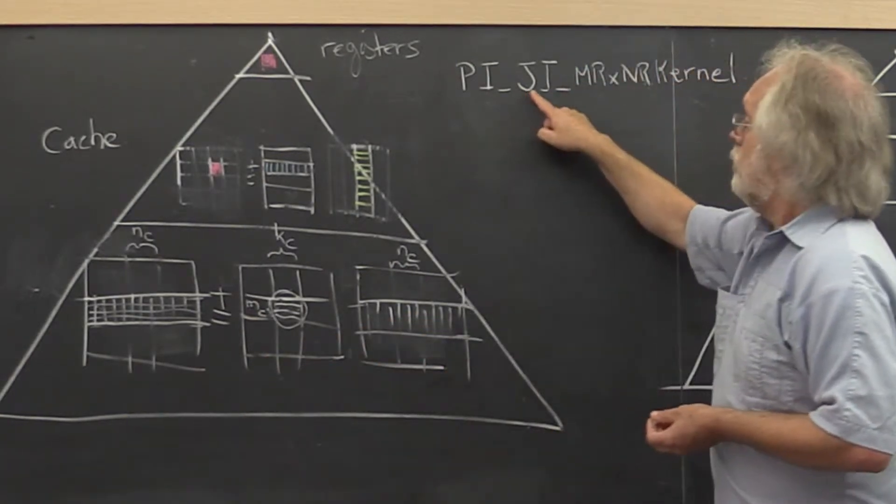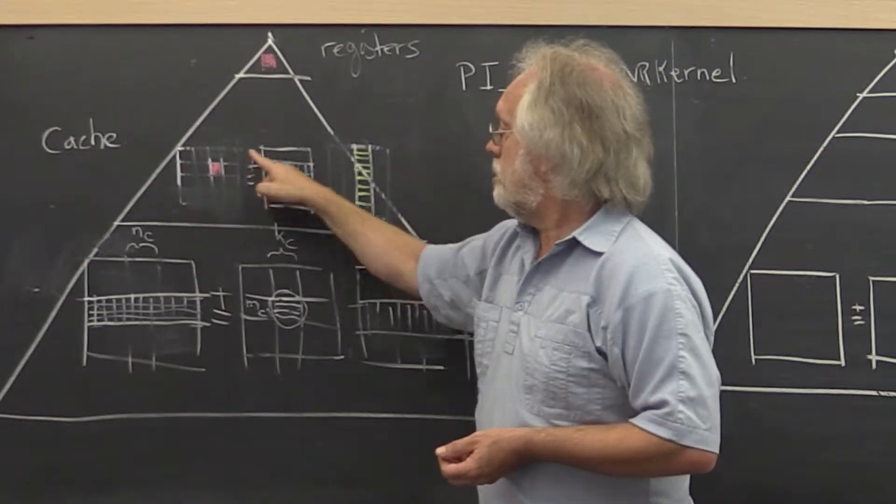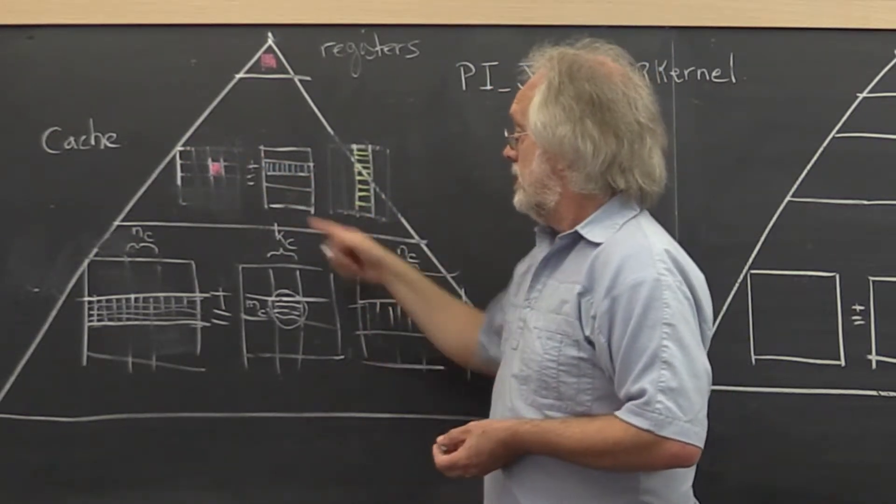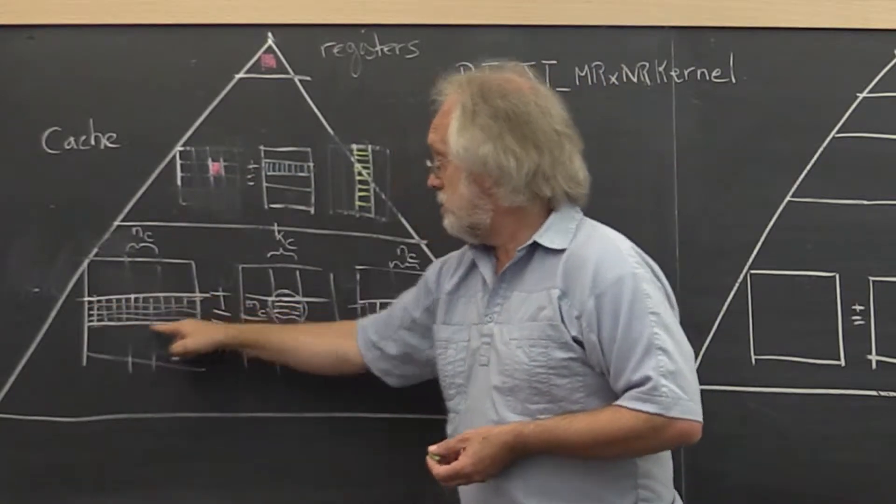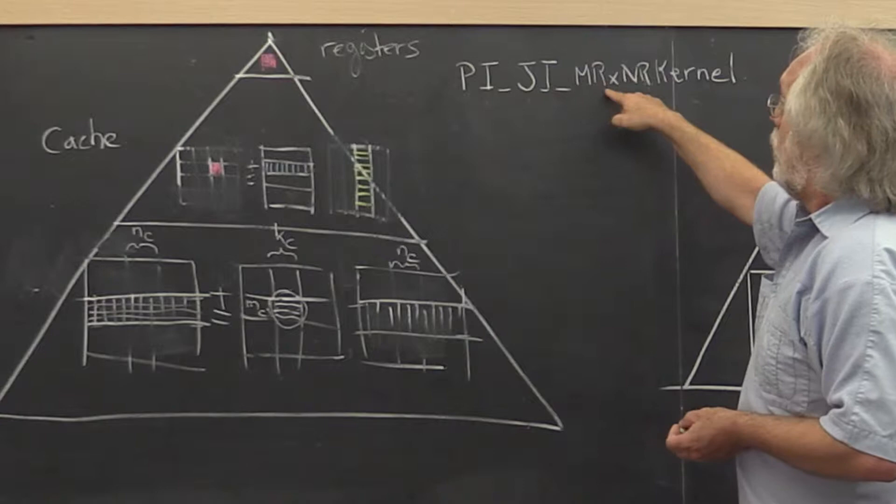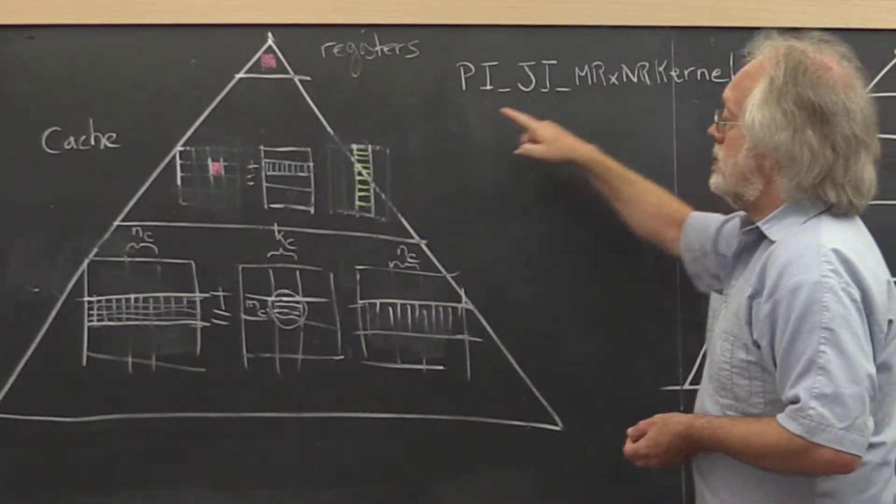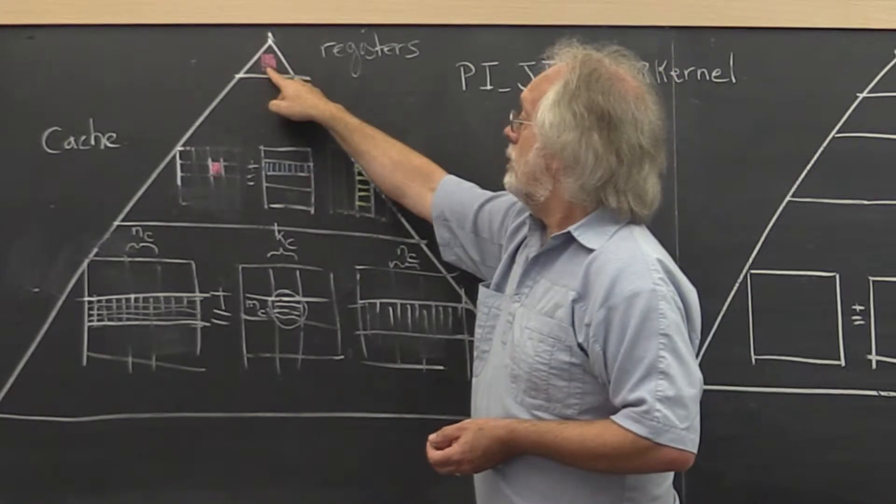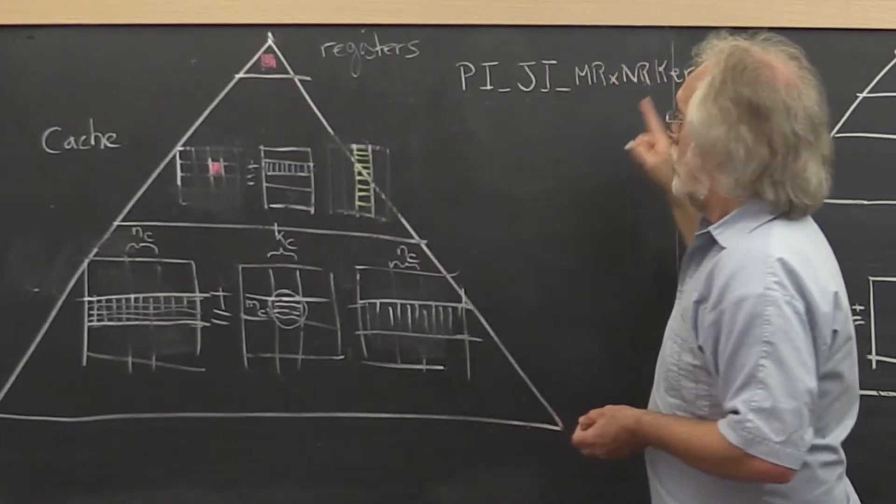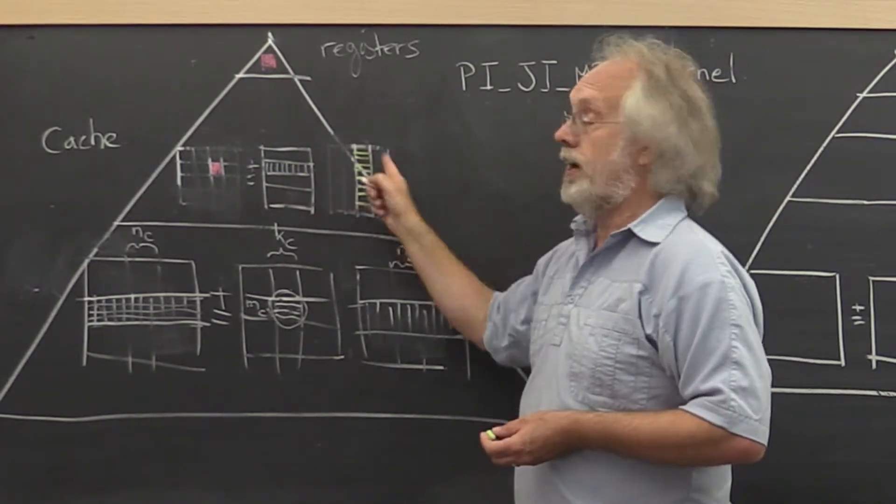followed by a J-I loop that hits all of the micro tiles in the block of C. Actually, that's all of these micro tiles. And then a call to a micro kernel that places a micro tile of C into the registers and then calls the micro kernel with micro panels of A and B.